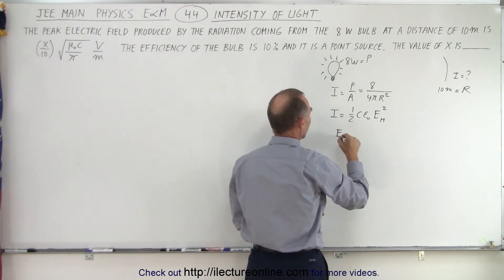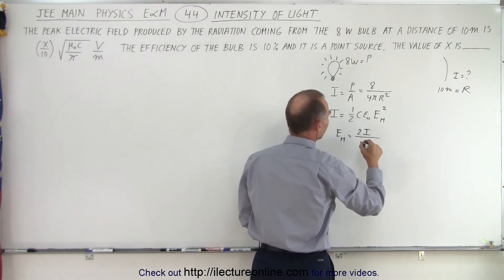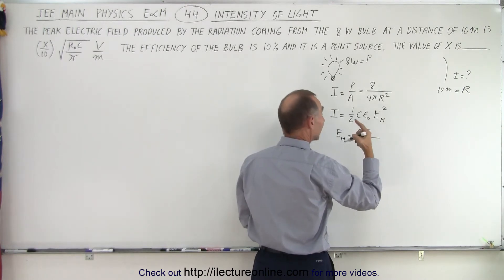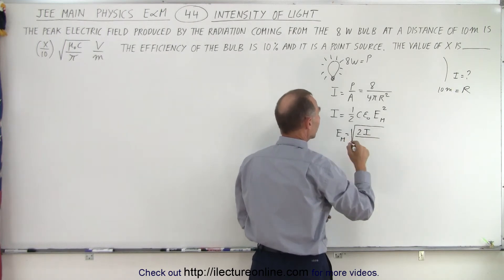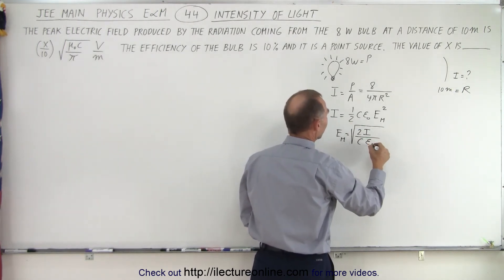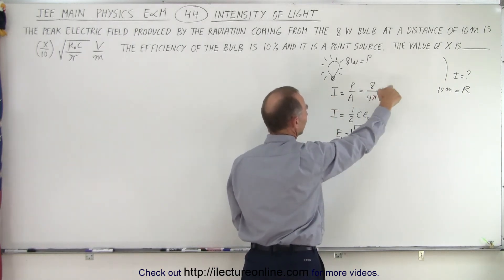So that means that e sub m is equal to 2 times the intensity divided by, or I should take the square root of that. So the square root because I take the square root here. So that's equal to 2 times the intensity divided by the speed of light epsilon sub naught. And remember that the intensity is equal to this right here.